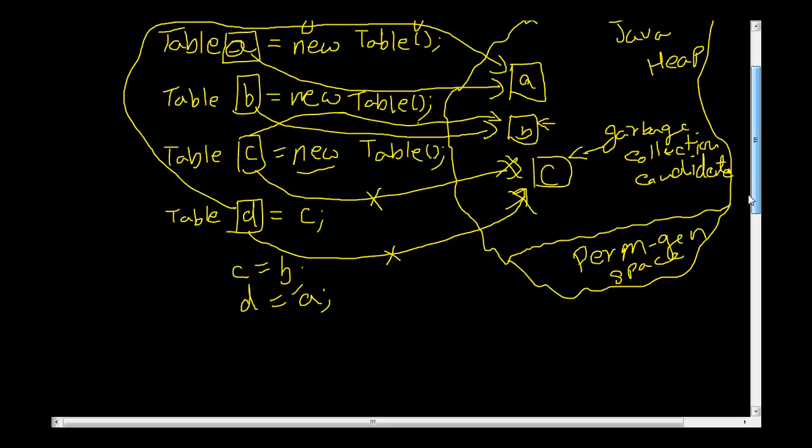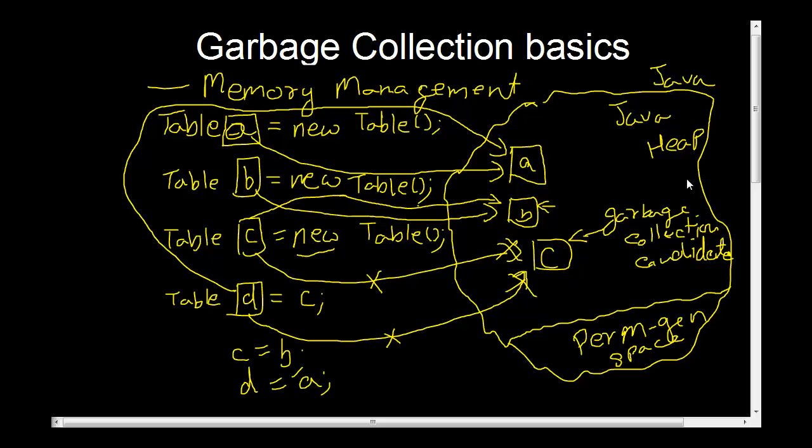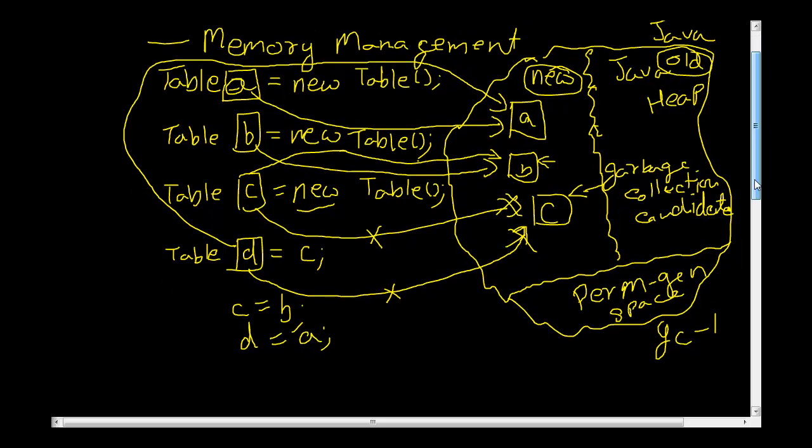Let's go to the little advanced pieces of the garbage collection techniques. Within the Java heap, there are two regions of memory: new and old. So the first time the garbage collector runs, it cleaned up this object. This is gone. And at this point, these objects became a little older because they have survived one garbage collection run. As the objects keep on becoming older and older, as they survive more garbage collection runs, the objects move into the old region of the Java heap.